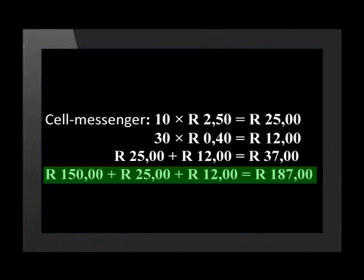Based on the assumption that Alfred will only make 10 peak time calls and send 30 off-peak SMS messages, it appears that the prepaid option comes in cheapest. But wait — there is one cost we haven't taken into consideration. Alfred needs to buy a phone. The phone he wants will cost him 150 Rand a month to pay off. Add this cost to the other costs and Alfred has a total monthly cost of 187 Rand.